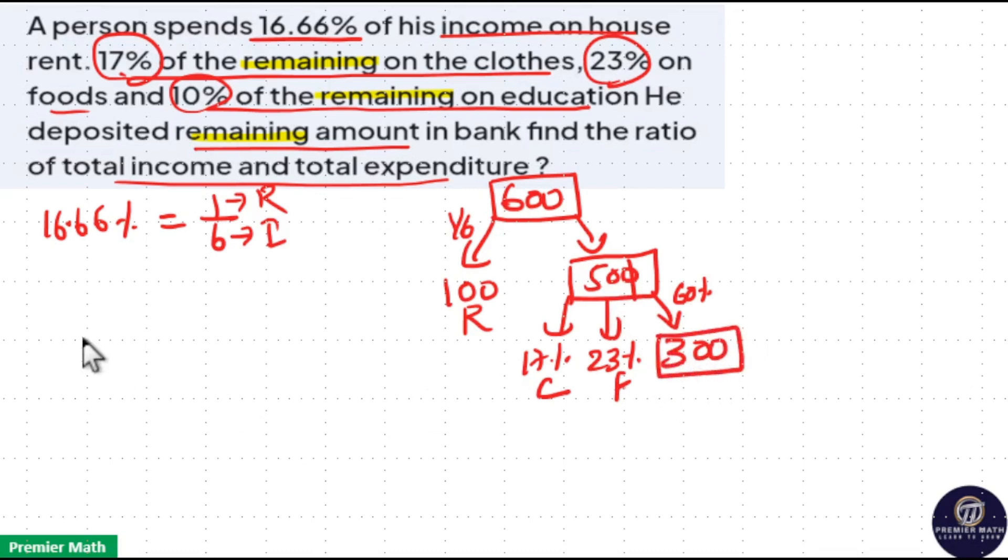Now out of this 300, 10% of the remaining on education means 10% of this 300 on education, which means the remaining 90% is the savings. 90% means 270 rupees is the savings.